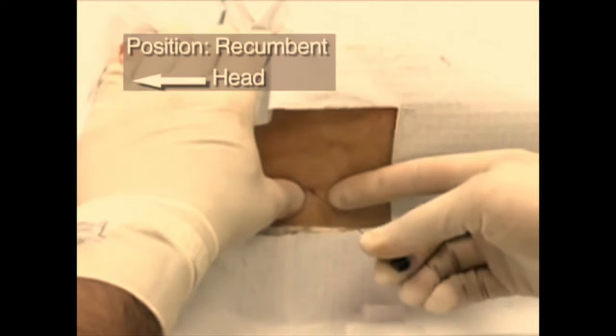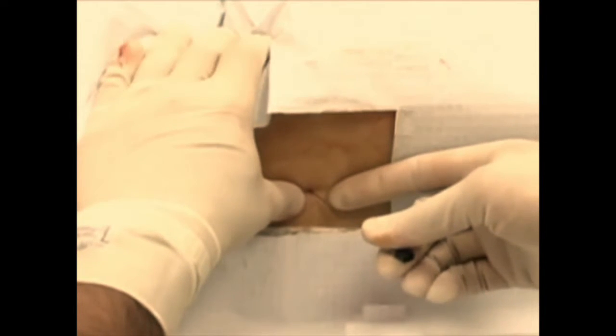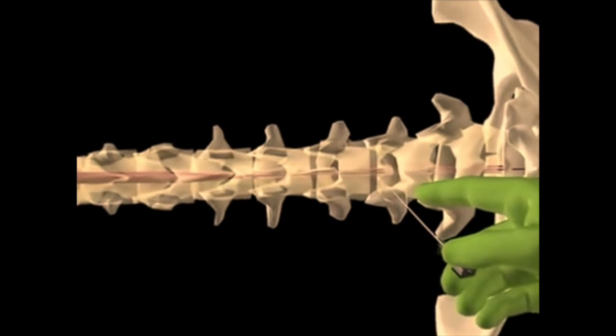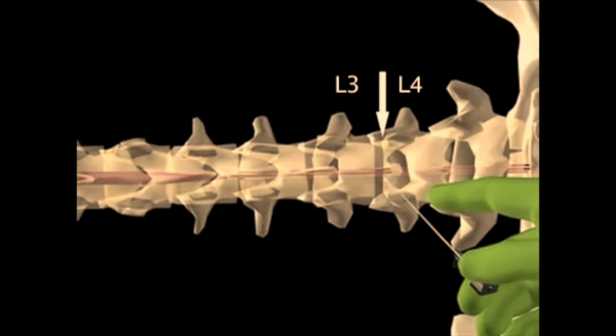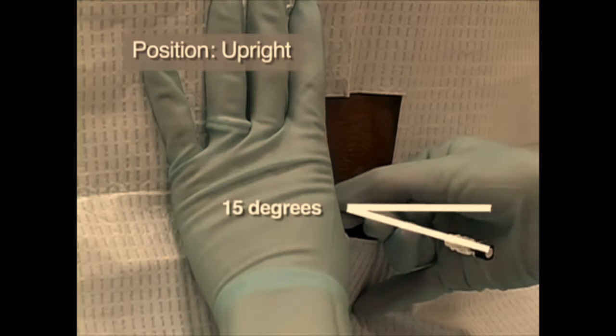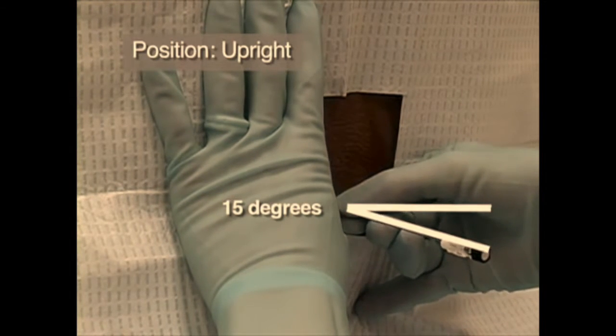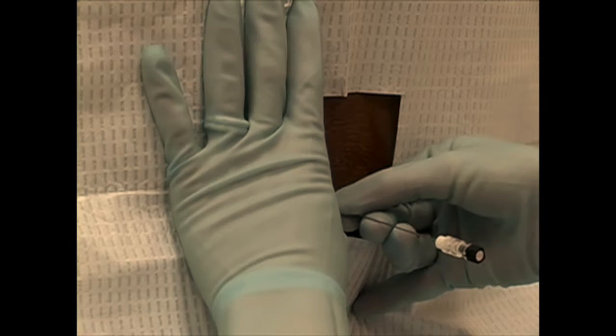Insert the needle with stylet firmly in place in the midline at the superior aspect of the inferior spinous process, directing it at an angle of approximately 15 degrees as if aiming at the patient's umbilicus.